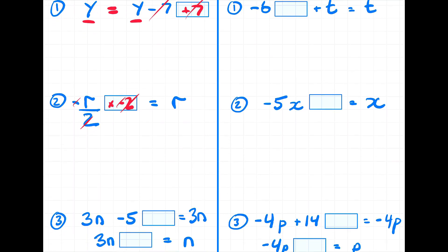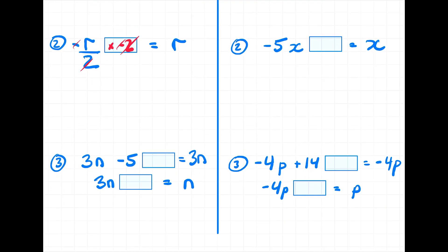Let's take a look at the third example, in which case we have two different steps to do. In the first case, to make both sides equal, I will add five, canceling these two — I've got three n equals three n. And now in order to end up with just an n, because it's three times n, I will divide by three, eliminating those, and I end up with n equals n.